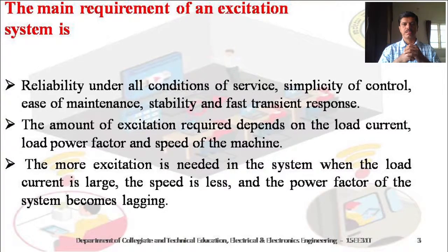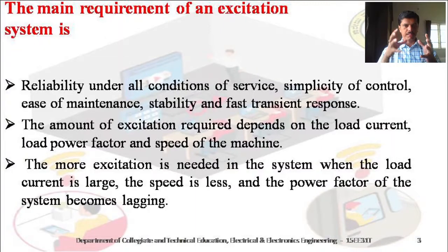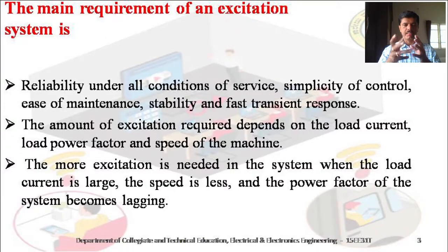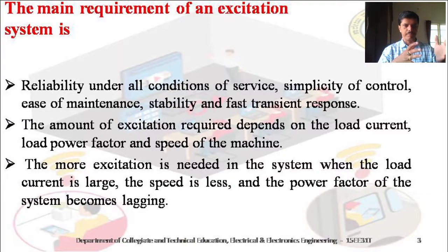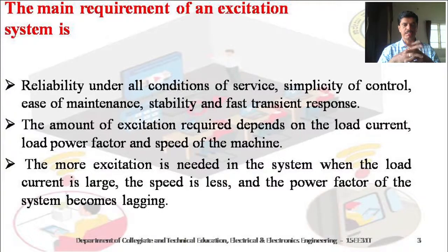Now, what are the main requirements of the excitation system? The first requirement is reliability under all types of service conditions. Whatever service is given by the alternators, the reliability of the system is very good. By using this type of excitation system, we can easily control the magnitude of the output voltage required for the excitation of the field winding. Electronic equipment is used, and maintenance of those equipment is very easy. This system also provides stability for all transient response conditions.